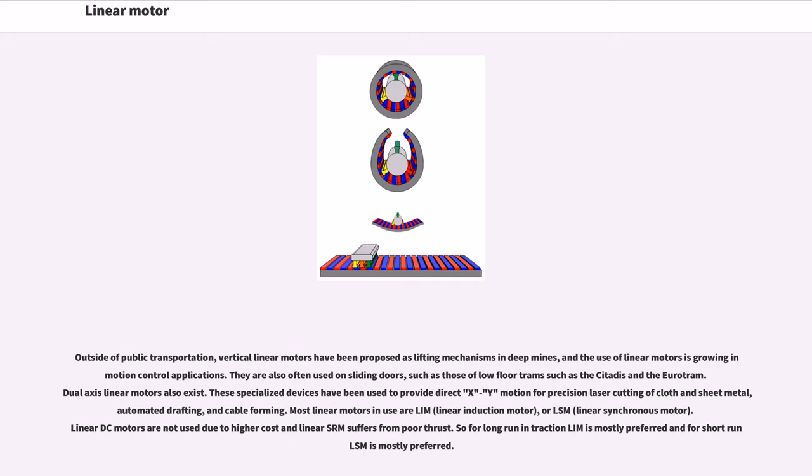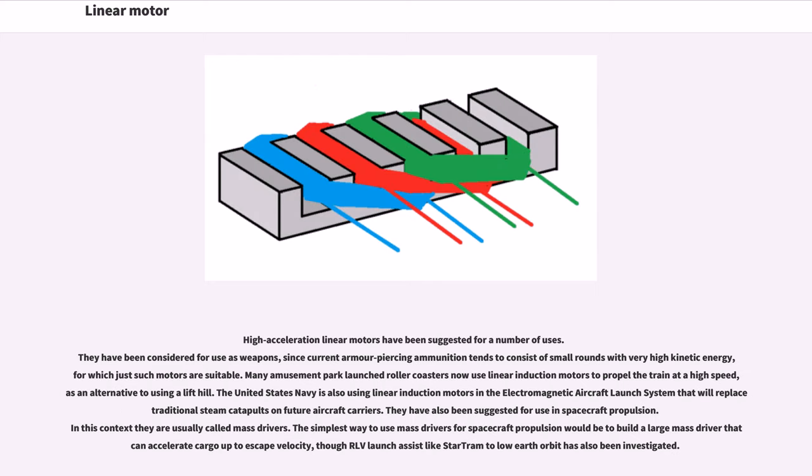Most linear motors in use are LIM or LSM. Linear DC motors are not used due to higher cost, and linear SRM suffers from poor thrust. So for long runs in traction, LIM is mostly preferred, and for short runs, LSM is mostly preferred.